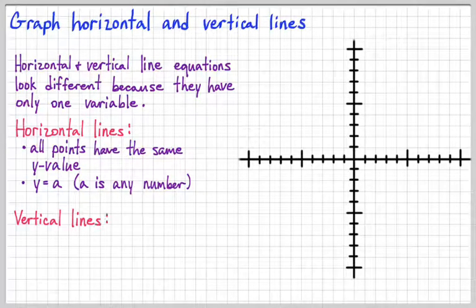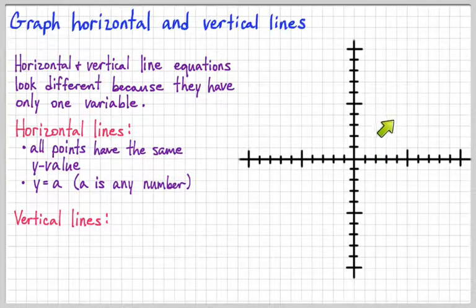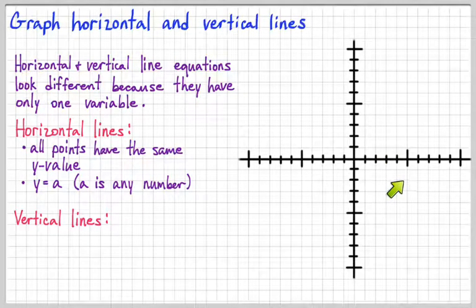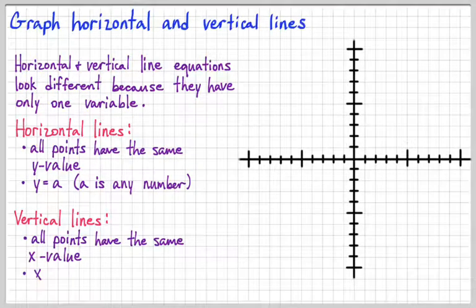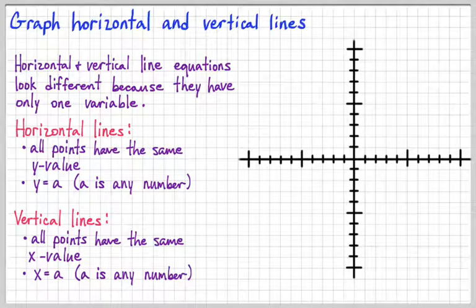For vertical lines, they run up and down, so all the points have the same x value, and the equation just looks like x equals some number.